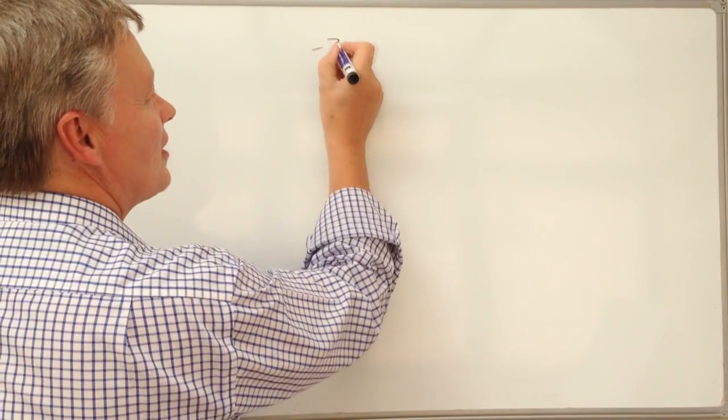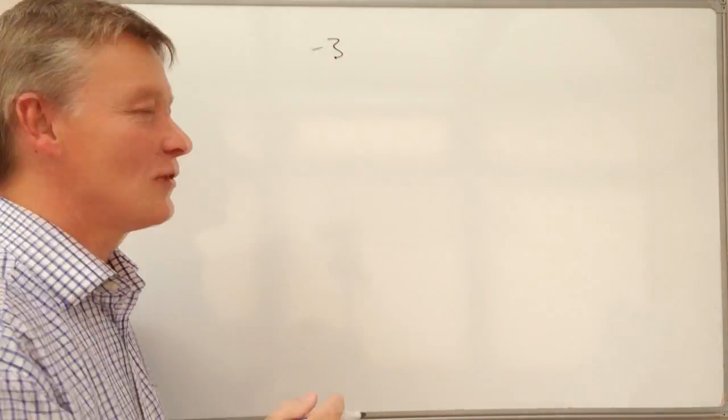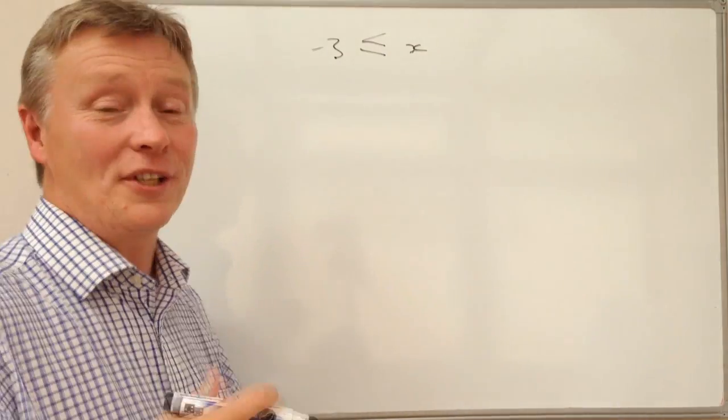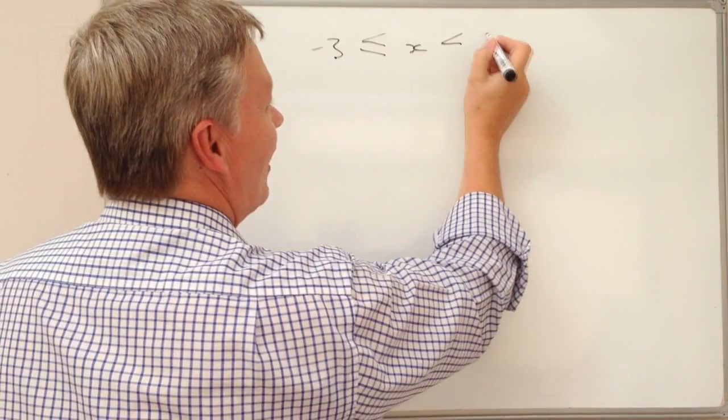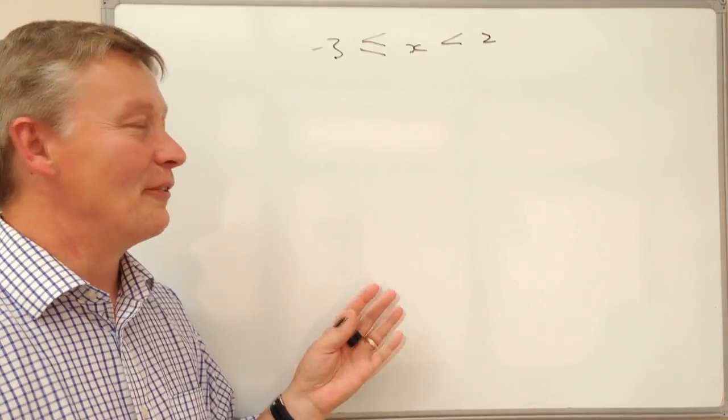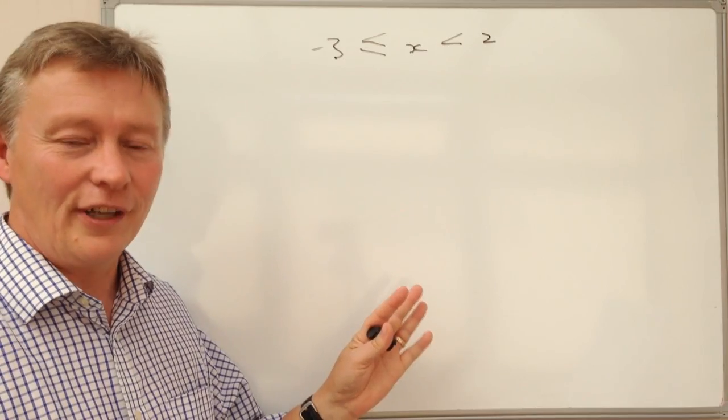The way that it will be presented will be something like -3 is less than or equal to x, which is also less than 2. And you look at it and think, oh, I don't know where I'm going to start with that. Well, it's fairly straightforward...